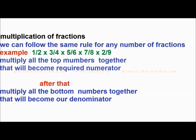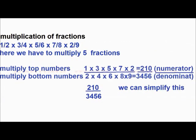We can follow the same rule for any number of fractions. For example: 1 by 2 into 3 by 4 into 5 by 6 into 7 by 8 into 2 by 9 — here 5 fractions are there. Multiply all the top numbers together: 1 into 3 into 5 into 7 into 2, that becomes 210. That is the numerator. And multiply all the bottom numbers: 2 into 4 into 6 into 8 into 9, that is equal to 3456. That is the denominator. So, the answer is 210 by 3456.